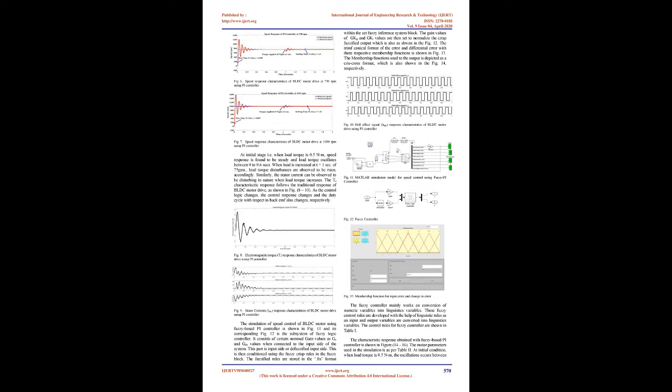To obtain the crisp output, the center of area or centroid method is used to determine the area of fuzzy sets within the fuzzy inference system block. The gain values of GKP and GKE are set to normalize the crisp fuzzy feed output, as shown in Fig. 12. The TRIMF conical format of the error and differential error with their respective membership functions is shown in Fig. 13. The membership functions used for the output are depicted in a criss-cross format, as shown in Fig. 14.